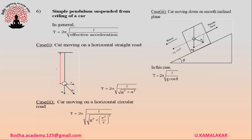Simple pendulum suspended from the ceiling of a car. We use T = 2π√(l/g_eff). Case 1: If the car is moving on a horizontal straight road with acceleration a, a pseudo force acts in the opposite direction to motion. The bob experiences both pseudo force acceleration and gravitational acceleration. Therefore, the resultant acceleration is √(g² + a²), and T = 2π√(l/√(g² + a²)).